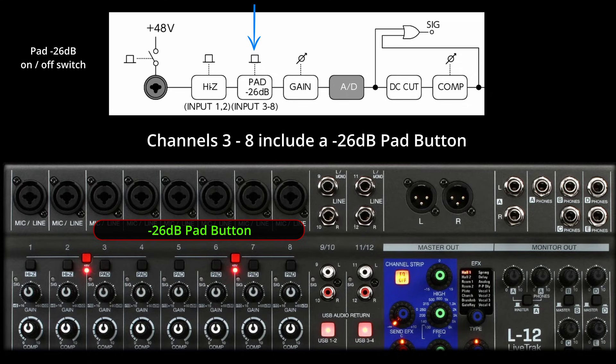Why use the Pad button? To prevent overload. If you're dealing with an exceptionally loud audio source — like a very loud instrument, a drum set, or a microphone capturing high decibel sounds — the signal might be too hot, leading to clipping or distortion. The Pad button attenuates the signal to keep it within a safe, distortion-free range for the mixer. It's crucial for achieving optimal sound quality, allowing you to control signal levels effectively and keep your audio clean and free from unwanted distortion.